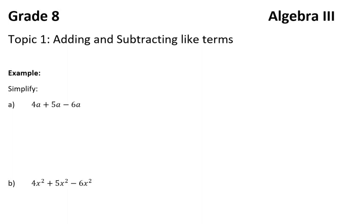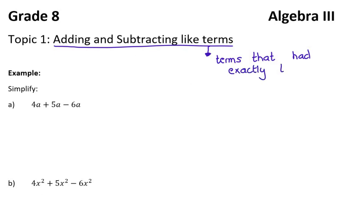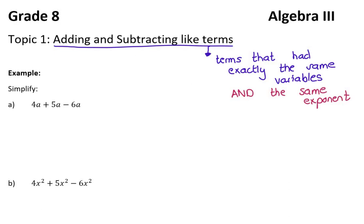Topic one: adding and subtracting like terms. Let's quickly remind ourselves — we've done this before. What does like terms mean? In Algebra 1 we learned that like terms meant terms that had exactly the same variable — so x's with x's. Now we've dealt with exponents, so we need to add an extra condition: those variables also have to have the same exponent. So it's not enough just to have the same variables — you have to have the same exponent. We've never had that concept before because we've been avoiding exponents, and now we're adding that in.